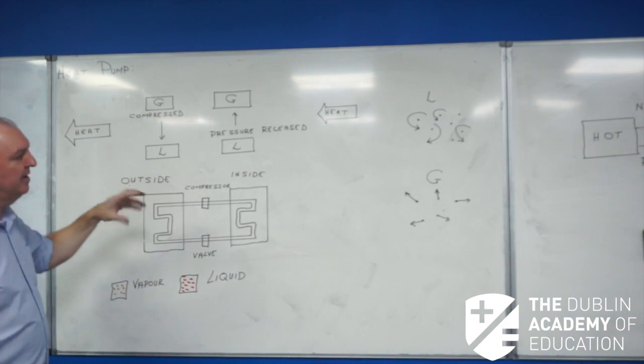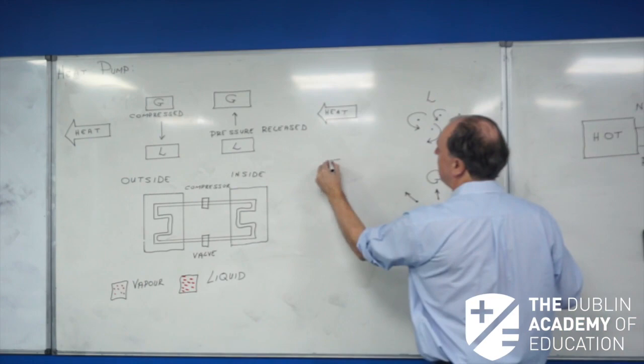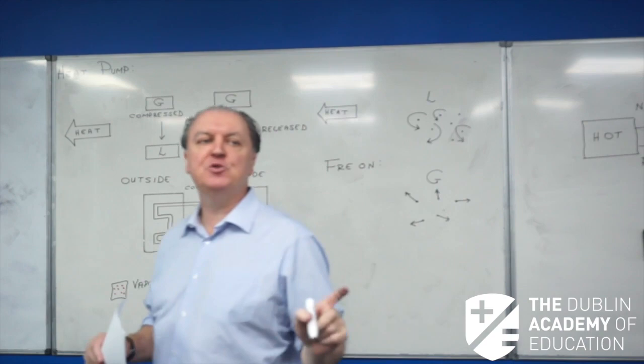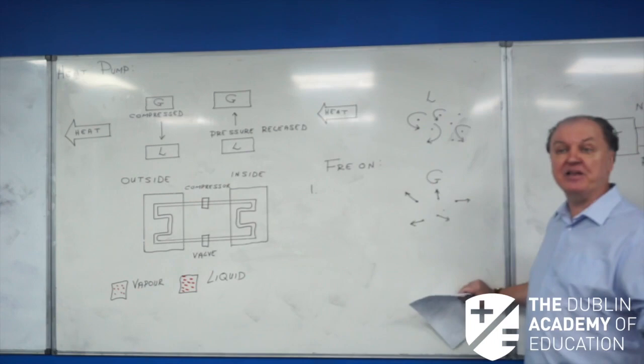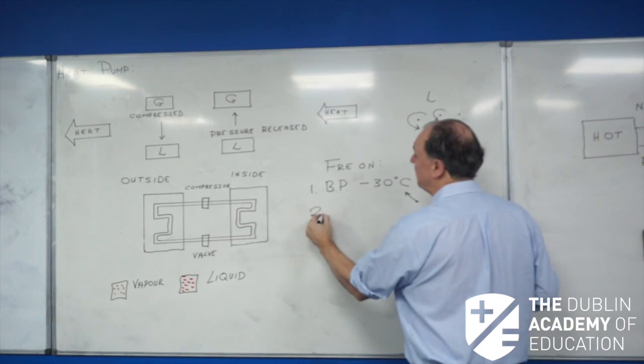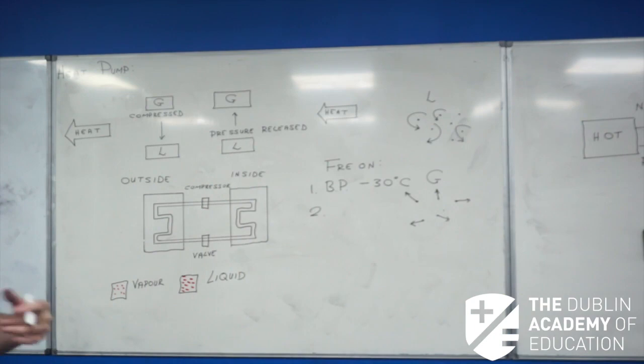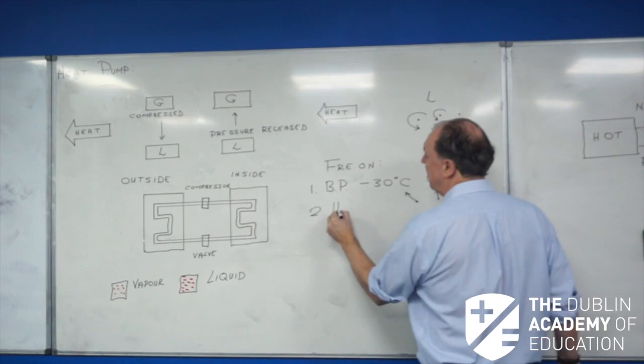Inside our heat pump, we're going to use a very special liquid, and that liquid is called Freon. Freon has two big properties. The first property is its boiling point is really low, about minus 30 degrees Celsius. The second thing about Freon is it has a very high SLH. So when it changes from a liquid to a gas, it needs a huge amount of energy to accomplish that. Those are the two properties of Freon.